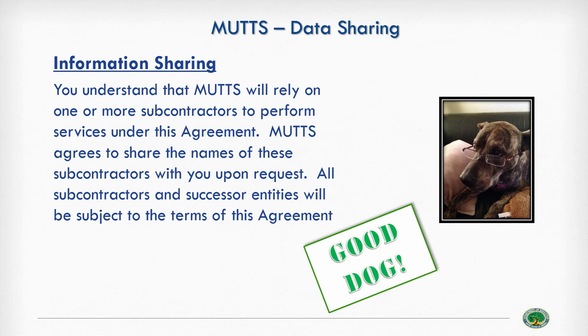A much better provision: you understand that MUTTS will rely on one or more subcontractors to perform services under this agreement. MUTTS agrees to share the names of these subcontractors with you upon request — this means the school can audit which third parties are receiving student information. And all subcontractors and successor entities will be subject to the terms of this agreement. The successor entities clause is important because vendors sometimes go out of business and sell their assets, which may include student information, so protections must continue to successor entities.